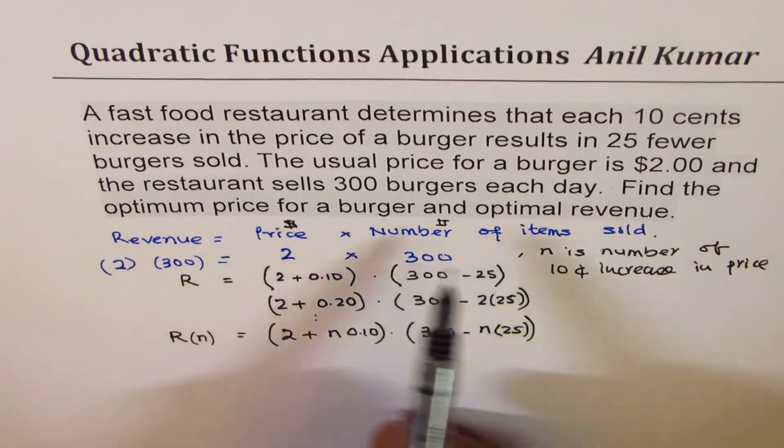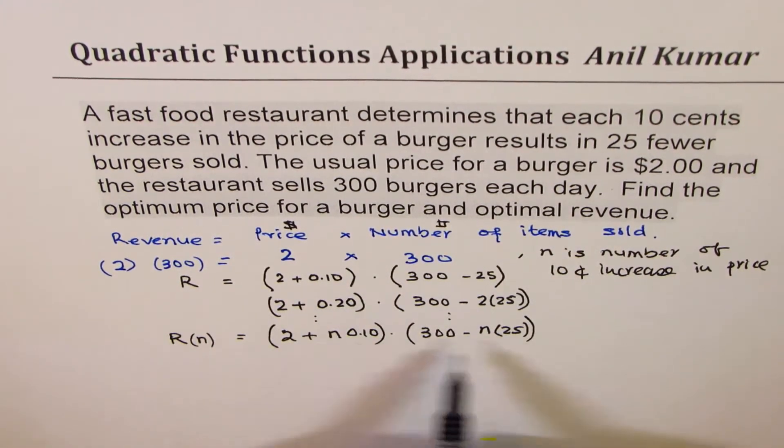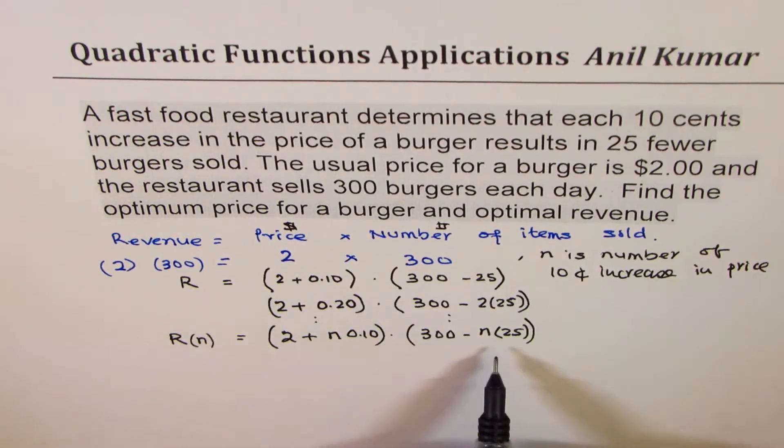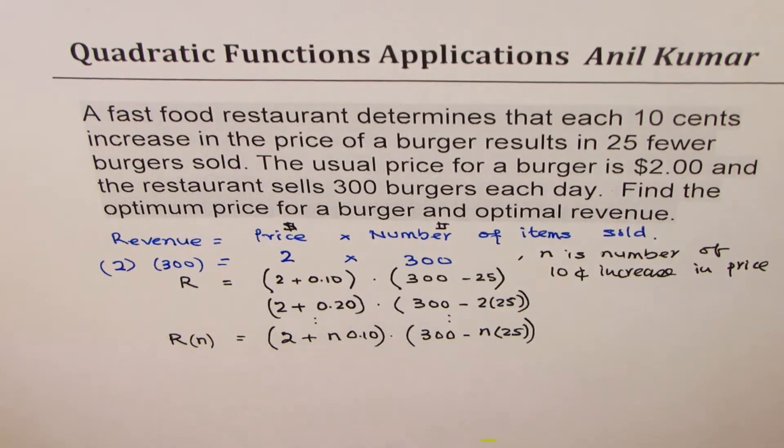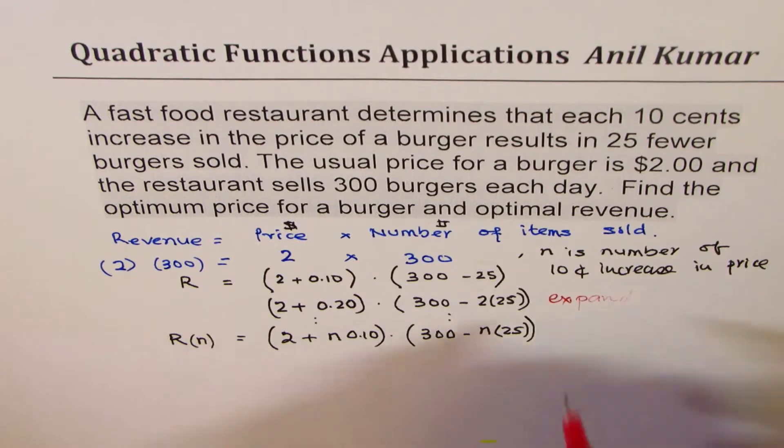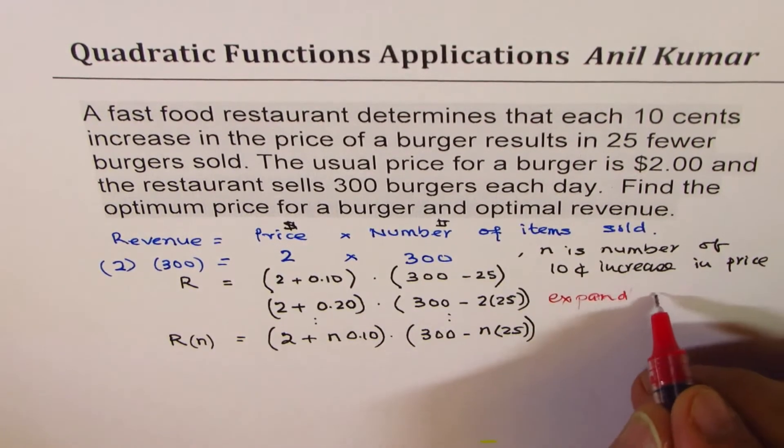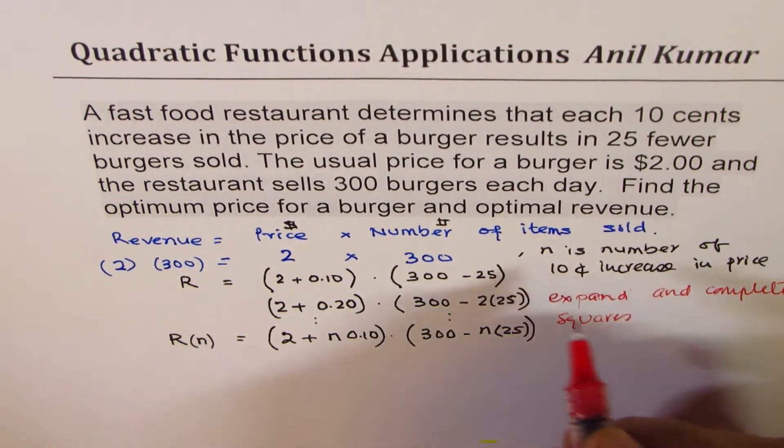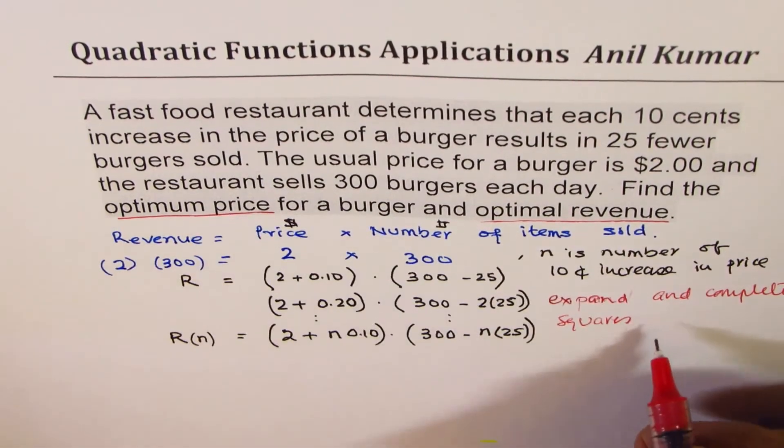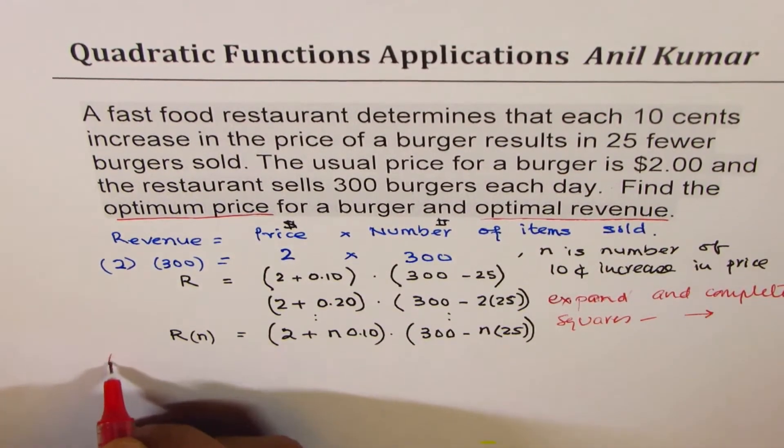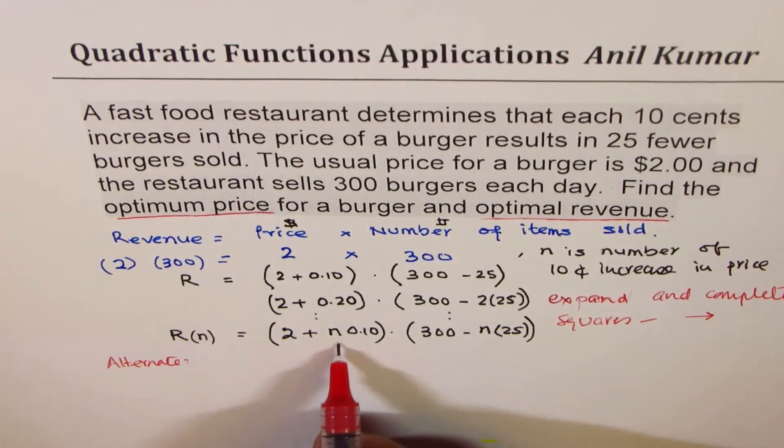Now we need to find optimal price and the optimal revenue. If you multiply this, you get your quadratic function in factored form, so you can get it in standard form and then you can do completing the squares to get your result. So one method could be expand and complete squares to find optimal revenue and optimal price. I'll leave this for you. I'll do the alternate method using these two factors.